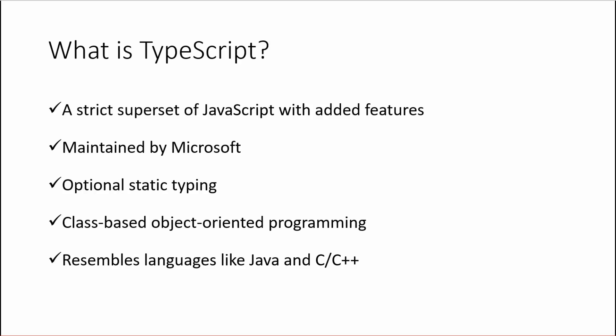What is TypeScript? It's a strict superset of JavaScript — everything JavaScript is, with some added features. It's maintained by Microsoft. It gives us features such as static typing, making it look a bit more like Java or C++. It also gives us class-based object-oriented programming, which is extremely helpful. Angular 2 is based on classes — every component is a class.